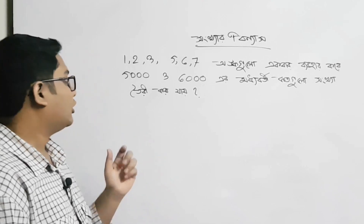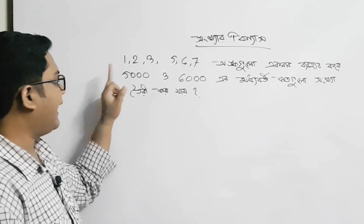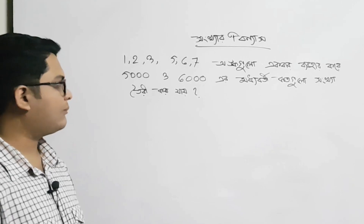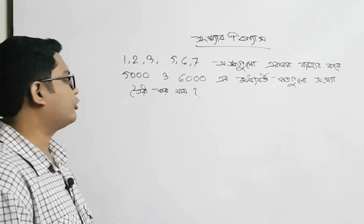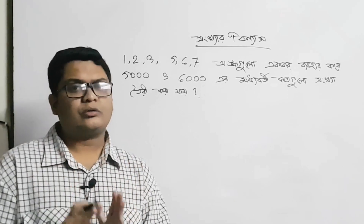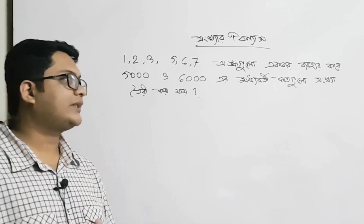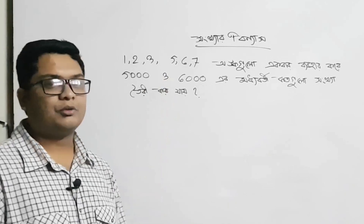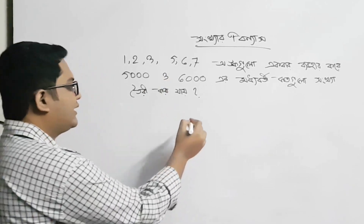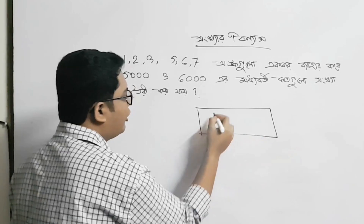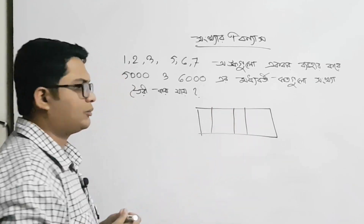So first we will solve the math. This is the permutation. Here we will solve the math. So this is your number in the math problem.